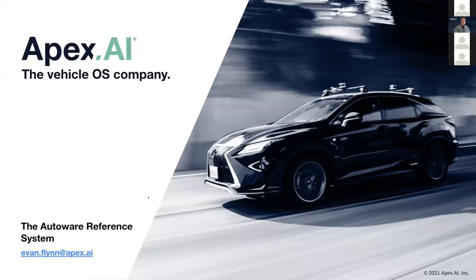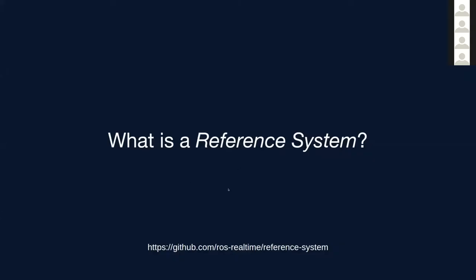Thank you William and MP for the introductions. As you just heard from William, there are plenty of different executors out there, and there are many different things we want to measure and compare each of these executors against each other — to view different performance of each one. That's where this idea of a reference system came to be. On every slide I've included the repository if you'd like to check it out; it's open-sourced on github.com in our ROS real-time working group under 'reference system.' Feel free to check that out during the talk.